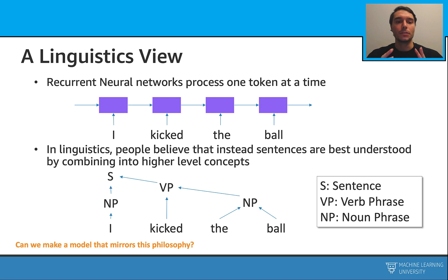Let's also get a simple recurrent neural network. We are going to use the sentence 'I kick the ball' and send it to a recurrent neural network, and we will see how it works with a linguistic view. When we send this information through an RNN, it takes the data and processes it one token at a time. It updates the hidden state in a way that tries to build these long-term dependencies. In the linguistic case, things are slightly different — we try to merge things into some higher-level concepts, and we have this tree-like structure.